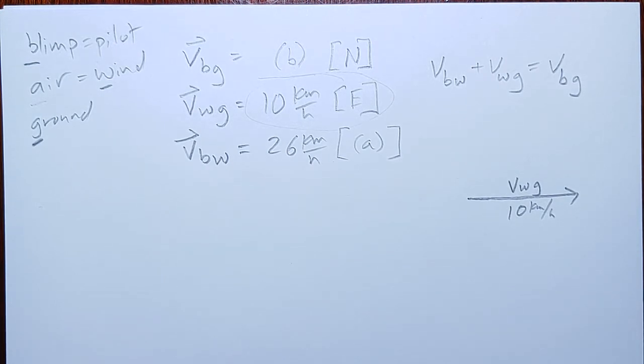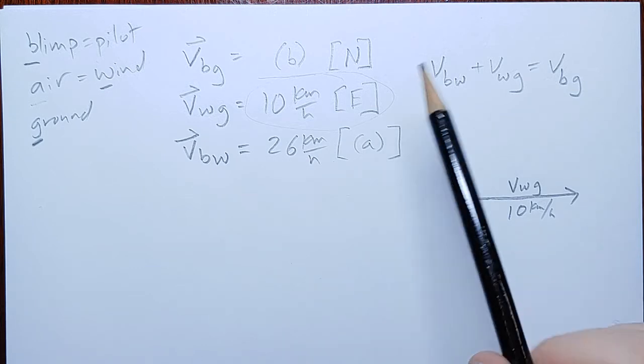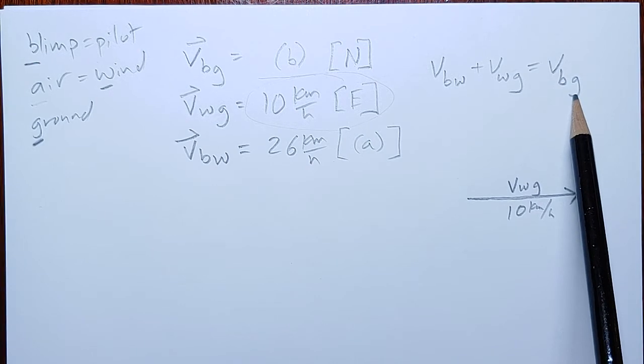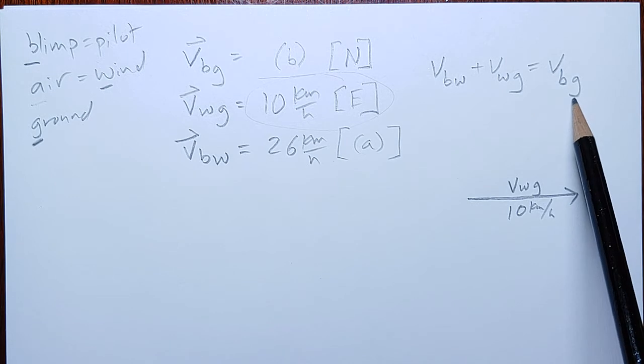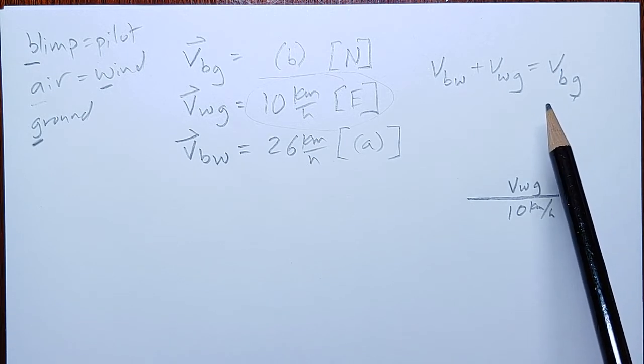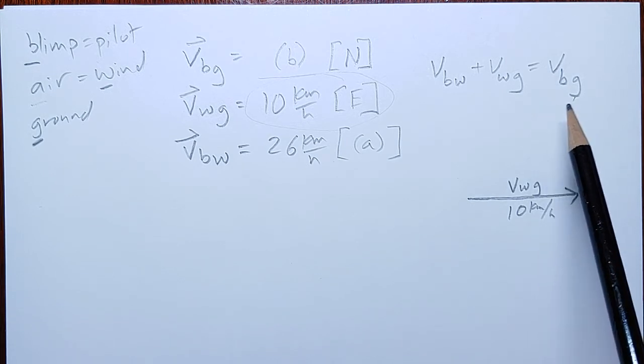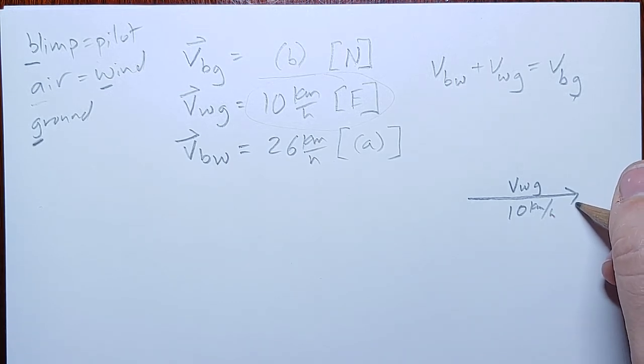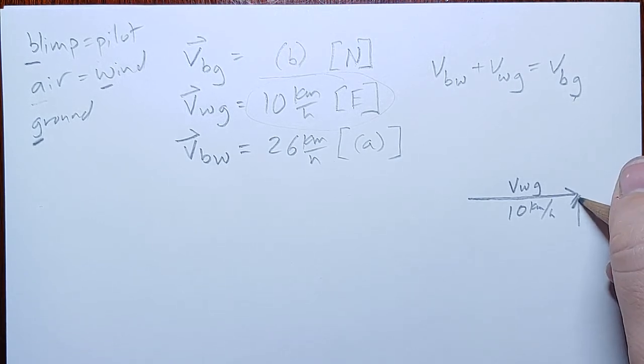All right, so, the blimp compared to the ground has to go north. And the blimp compared to the ground is the resultant. So my resultant has to be connected either tip-to-tip or tail-to-tail, with this one. And so, if it's going to be tip-to-tip, do like this.